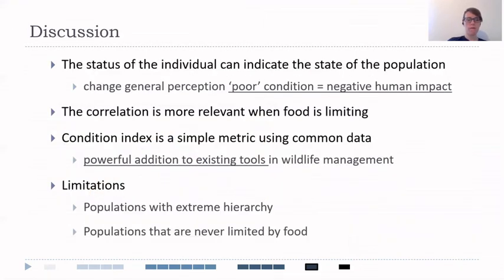So by determining the correlation between the individual state and the population dynamics, we could actually change this general perception that poor condition immediately means negative human impact. As seen in our results, we can actually get poor condition even when the abundance is high and even when the fishing mortality was quite low.